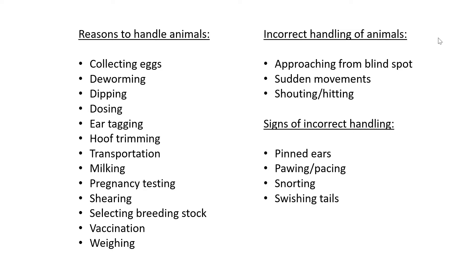Secondly, no sudden movements. If you approach an animal, make a soft noise so they see you coming. If you stand next to an animal very quietly and then suddenly move or make a sound, they will bolt. Thirdly, no shouting or hitting the animal — that is definitely uncalled for and not needed.